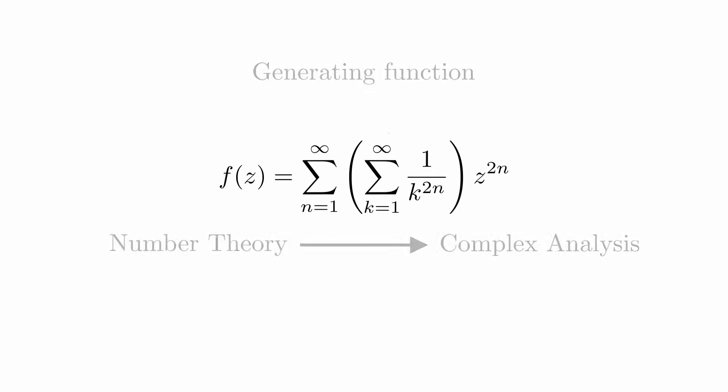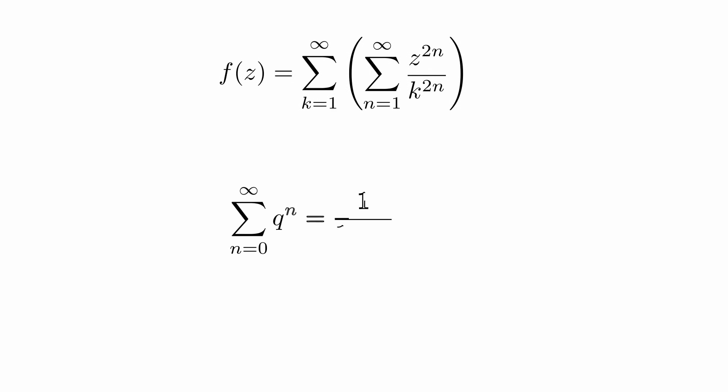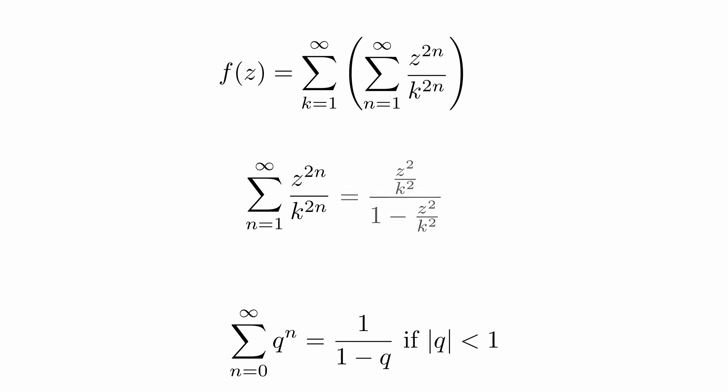So let's look at the generating function. We can interchange the sum and pull this factor in. The inner function is known as the geometric series. This generally evaluates to 1 over 1 minus q. Since our sum starts at n equal to 1, we get this result. So our generating function takes this form.